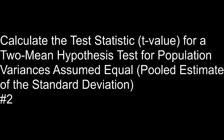This video covers the objective of calculating the test statistic, or t-value or t-score, for a two-mean hypothesis test. This is for population variances assumed equal. When the population variances or population standard deviations are assumed to be equal, we're going to be pooling our sample standard deviations to make an estimate of those population standard deviations, making a pooled estimate called SP. After you find that pooled standard deviation SP, you can then go about finding the test statistic for the difference in sample means.